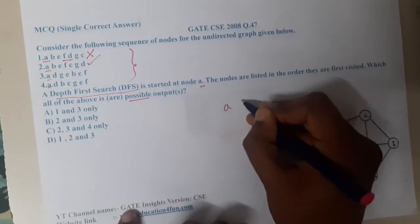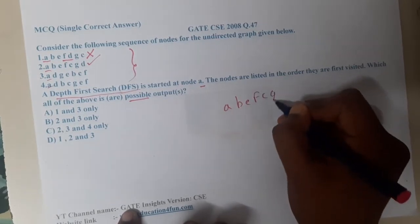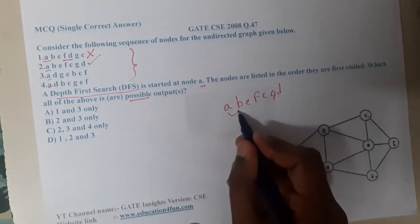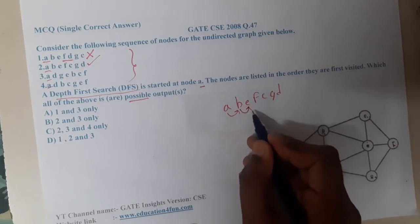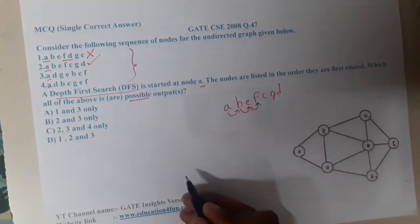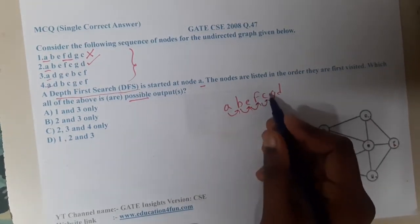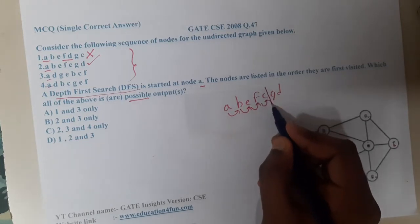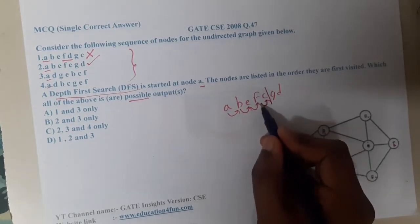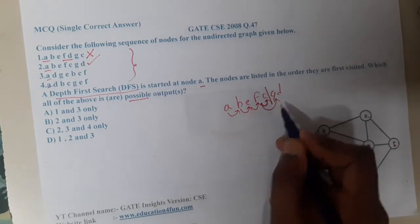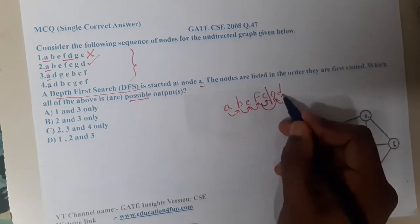So it worked in this way guys. I can just draw you the flow also. From a I went to b, from b I went to e, from e I went to f, from f I went to c. I am stuck here, so from c there is no other path so I tracked back to f. From f I went to g. Again from g I went to d in that way. Got it?